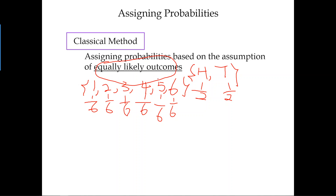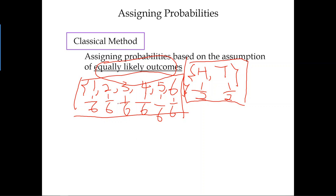Each outcome has exactly the same probability because we assume they are equally likely to happen. This is the probability distribution for tossing a coin once, and also for rolling a die once. You can verify: all probabilities are between zero and one, and one-half plus one-half equals one, and six times one-sixth also equals one. Both satisfy the requirements. This is the classical method — the key condition is that you believe each outcome is equally likely to happen.